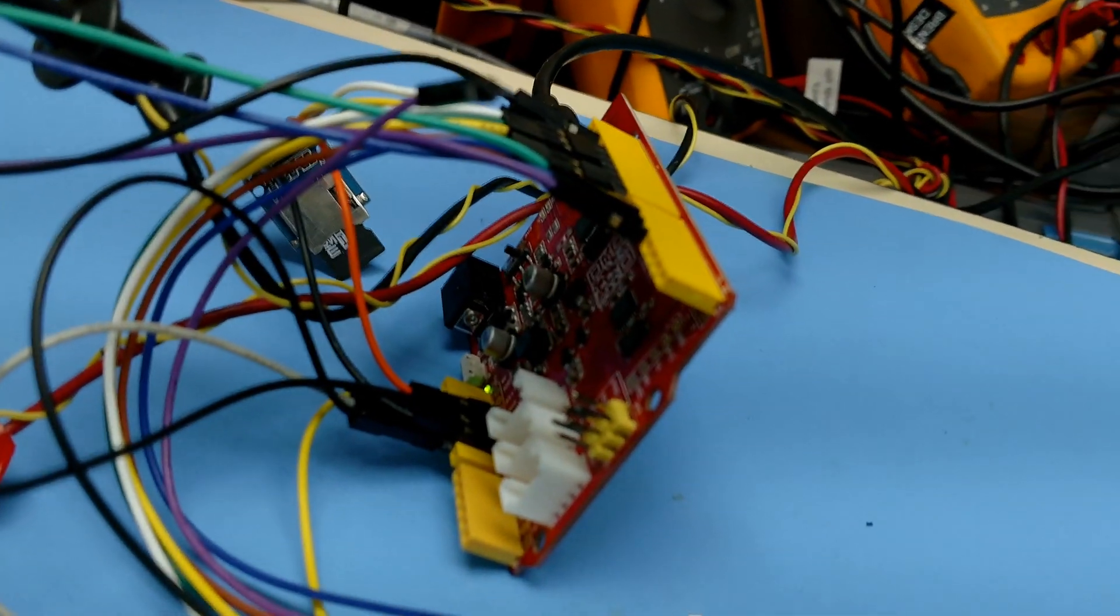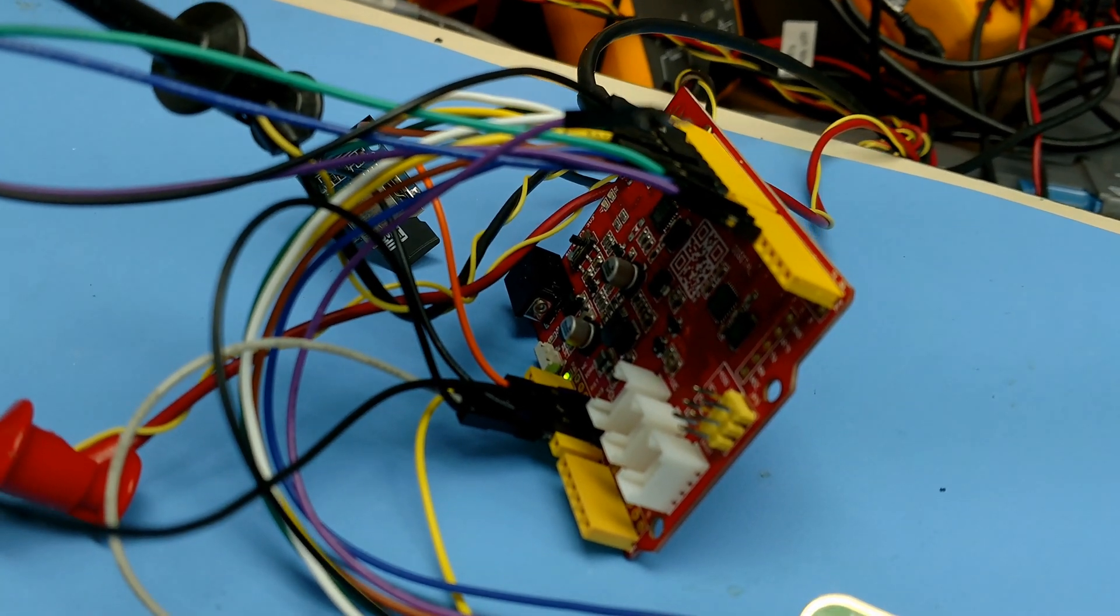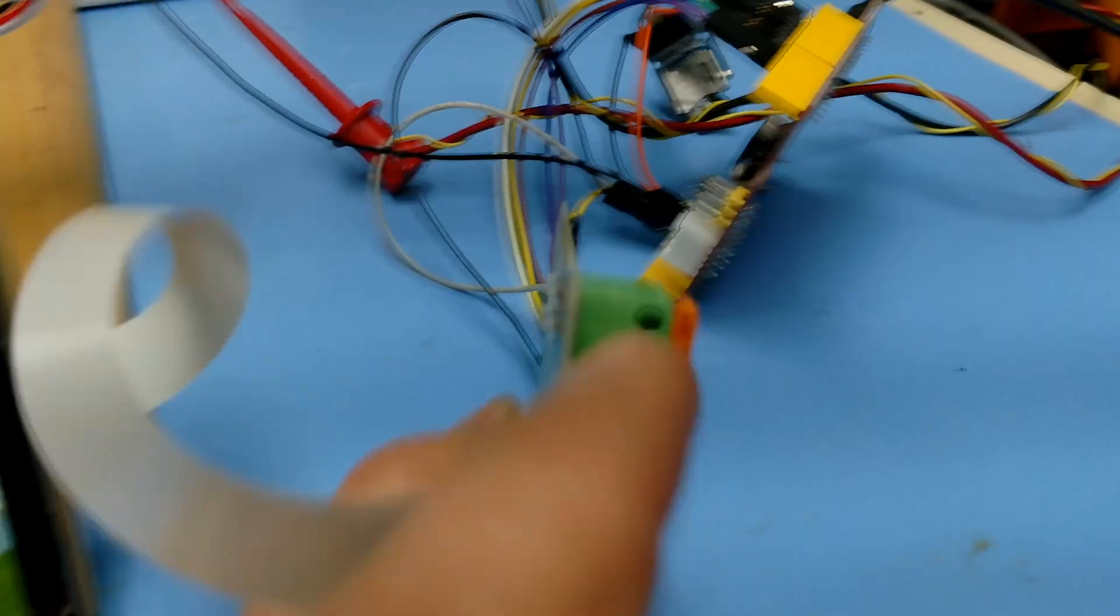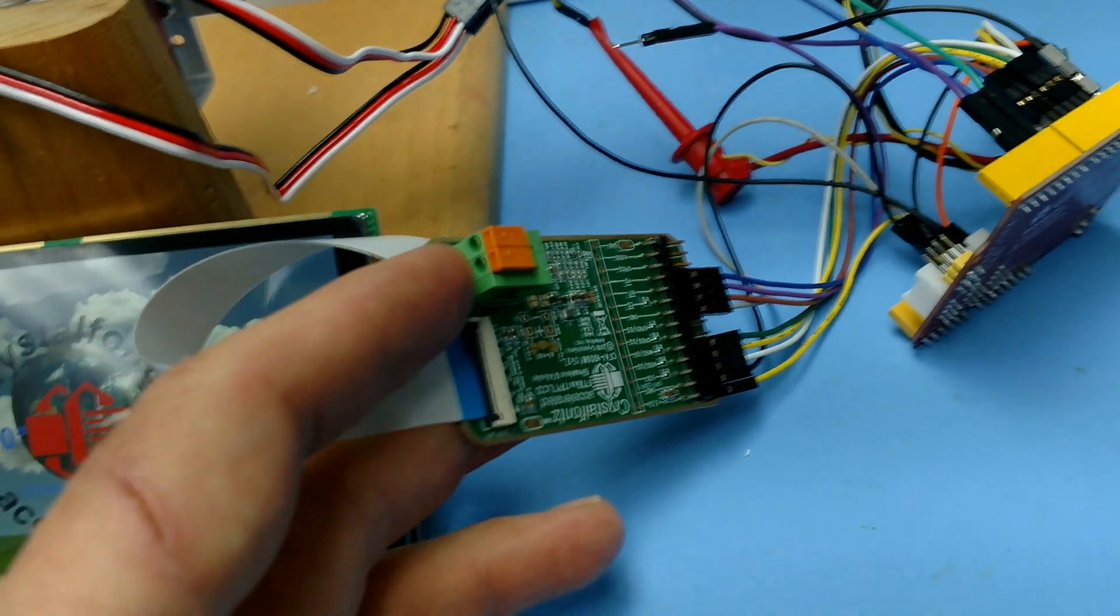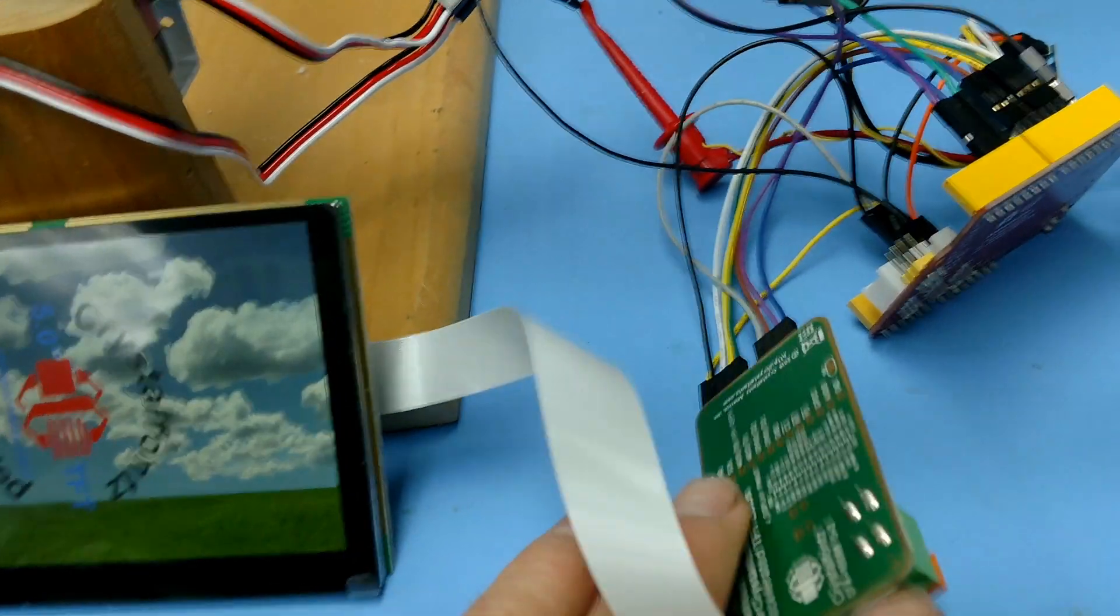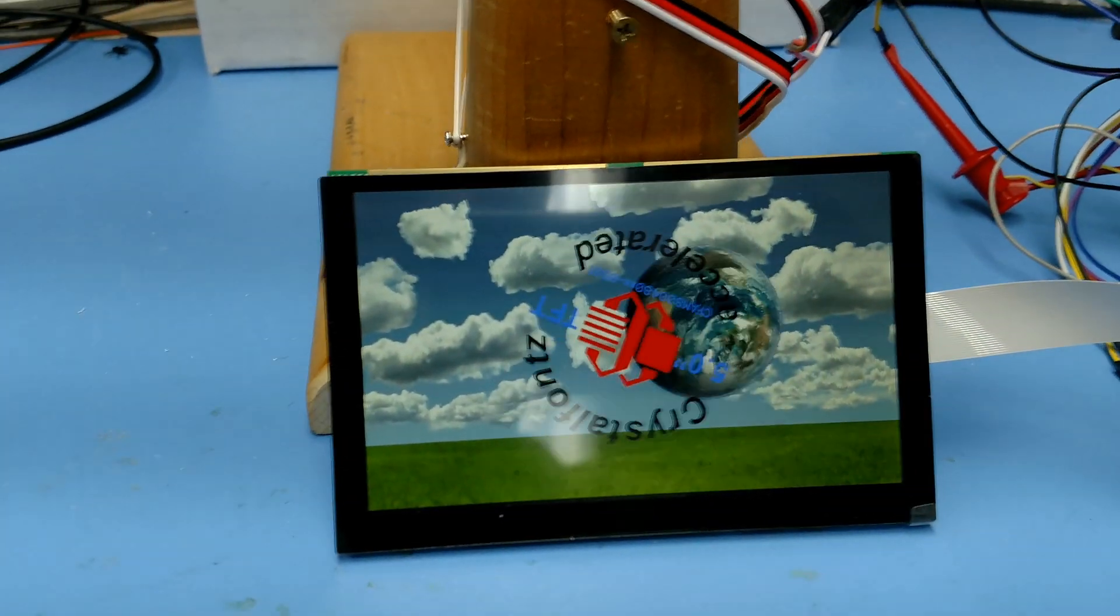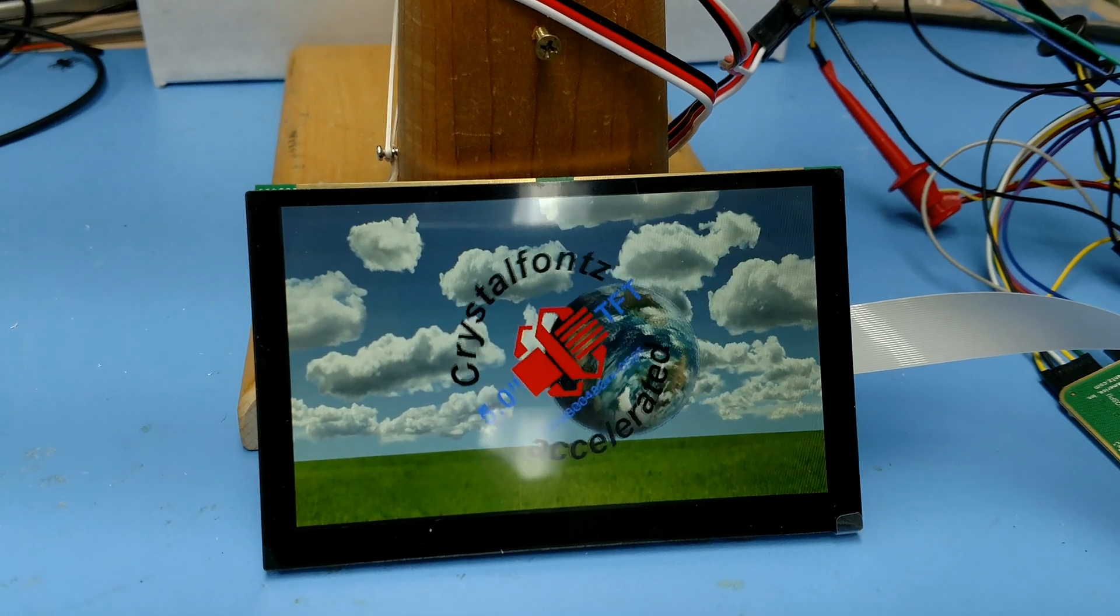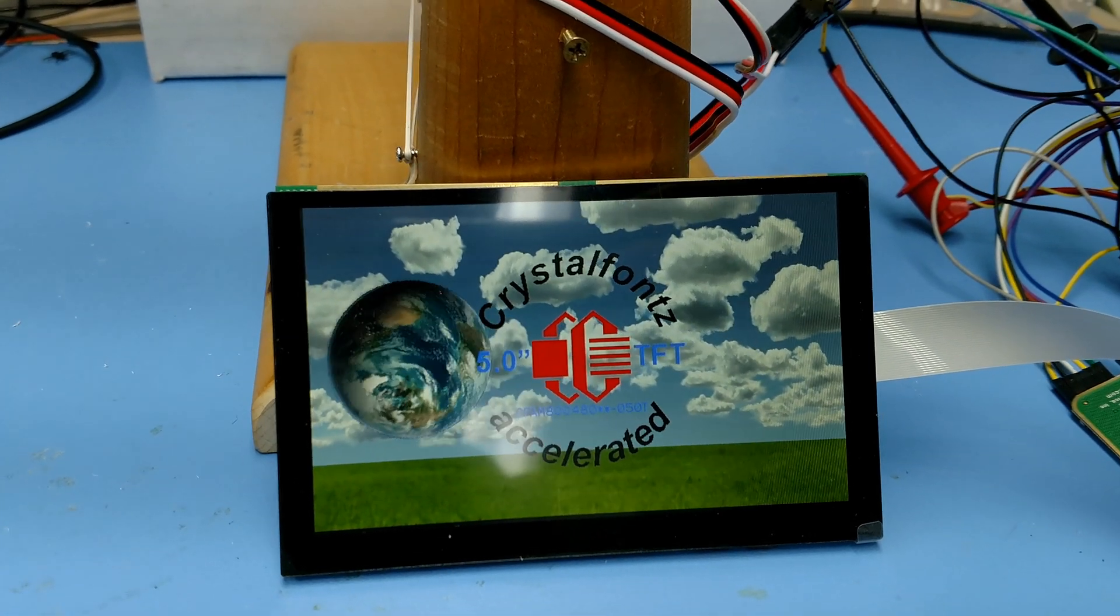Started with a C-Duino, which is an Arduino clone that runs at 3.3 volts. Hooks up to this little adapter board, which is a CrystalFonts 10098, and then to this CrystalFonts accelerated TFT that supports capacitive touch.